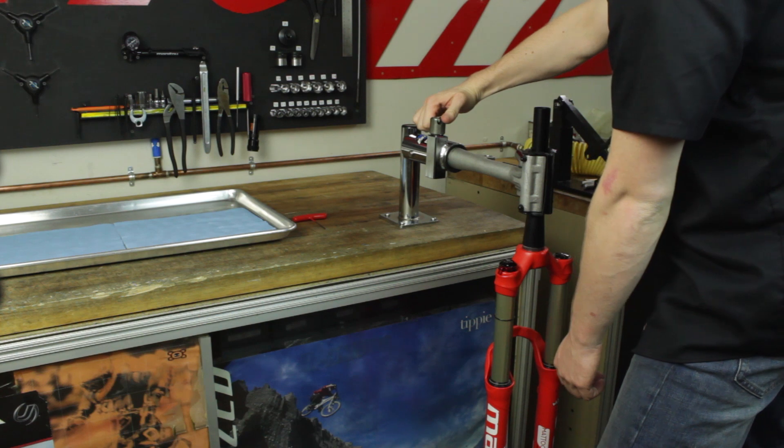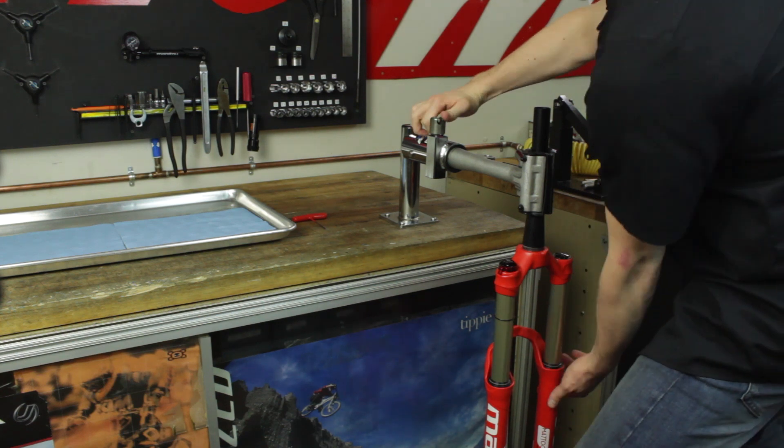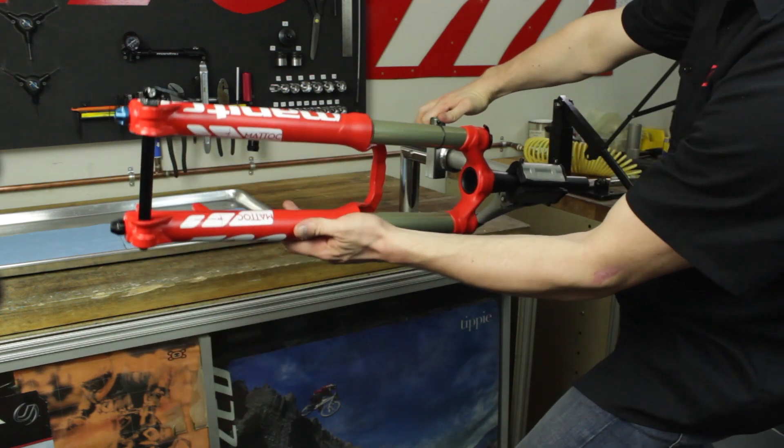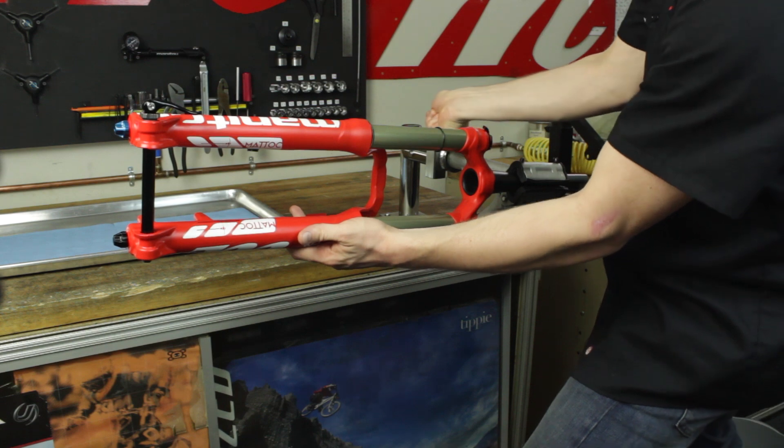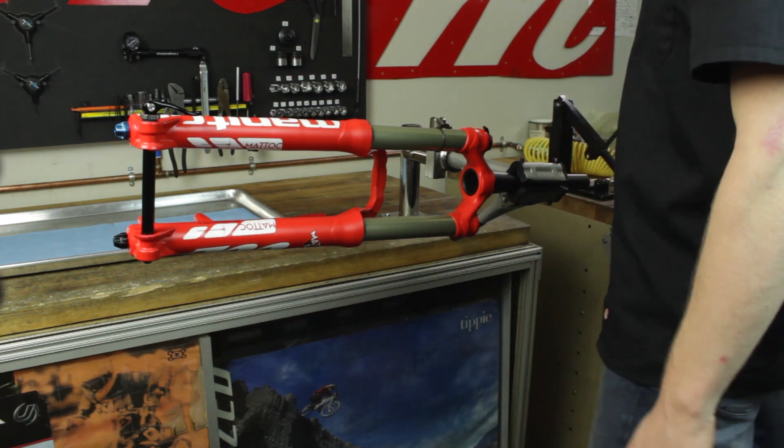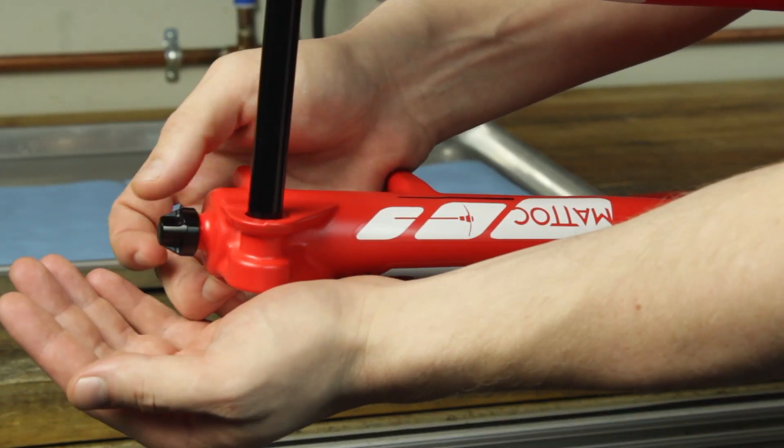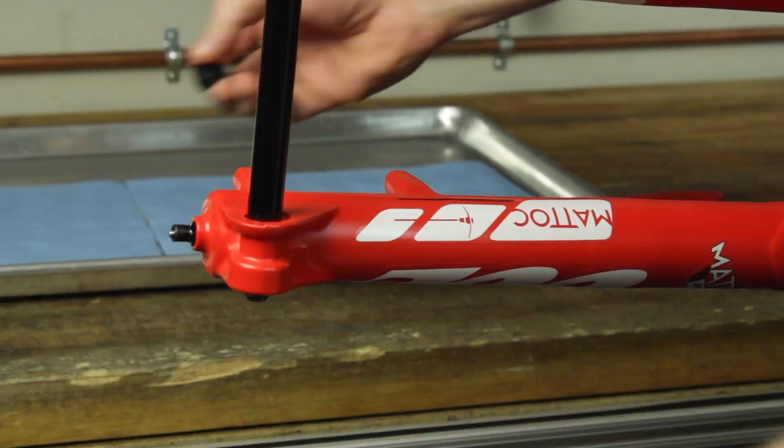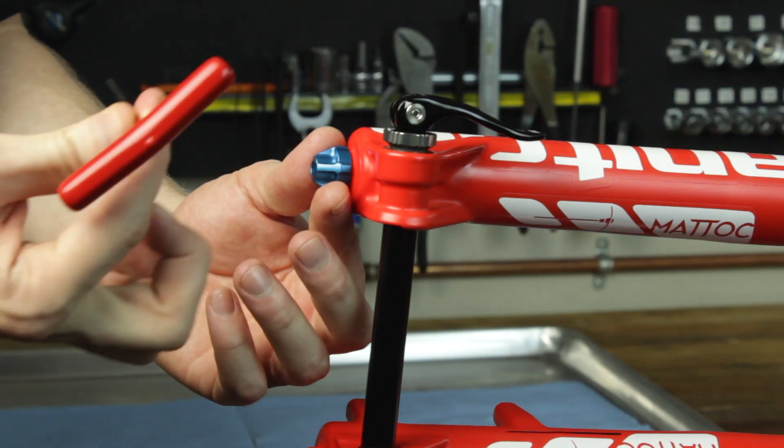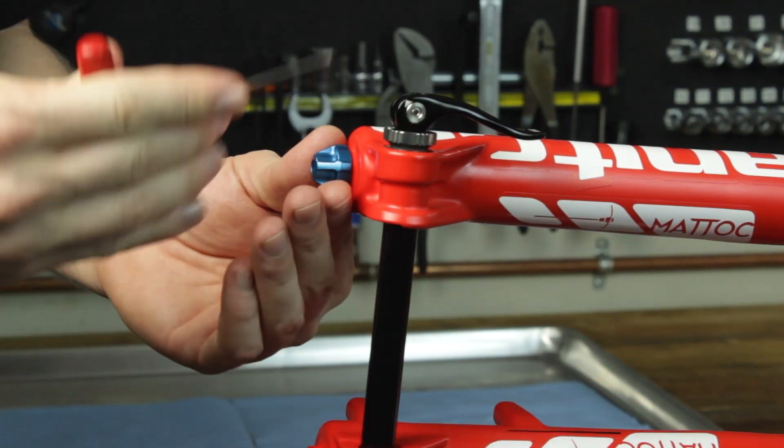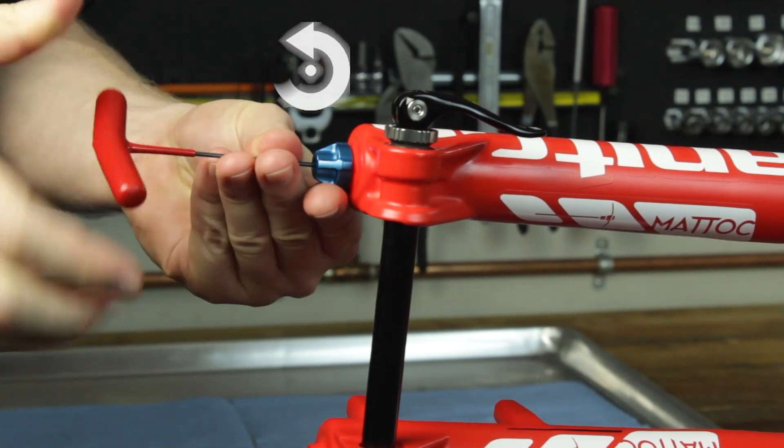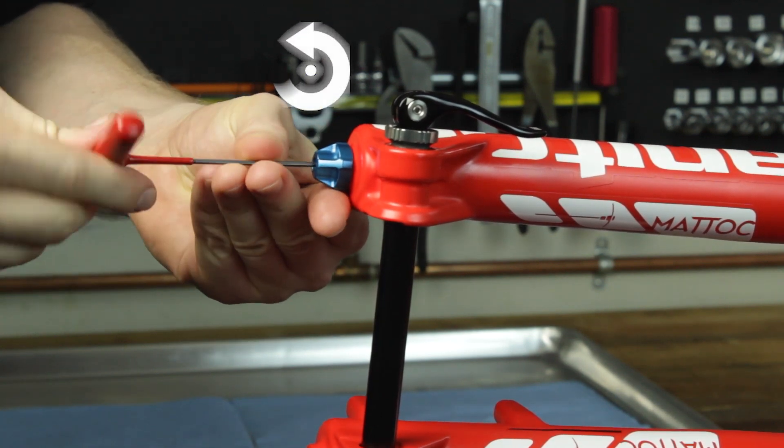Begin by clamping the Matic in a bike stand slightly on an upward angle. This slight upward angle will prevent the semi-bath fluid from leaking out of the fork during disassembly. Remove the black air valve cap by twisting counterclockwise. Remove the blue rebound knob by securing with two fingers and with a two millimeter Allen wrench, unscrew the bolt counterclockwise.